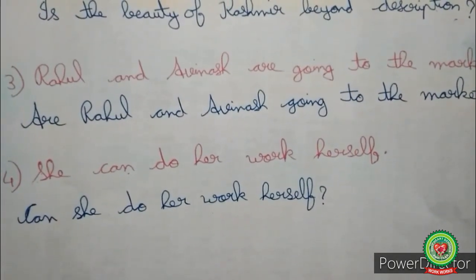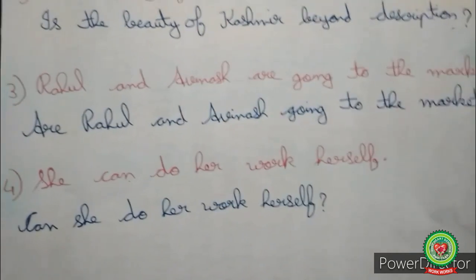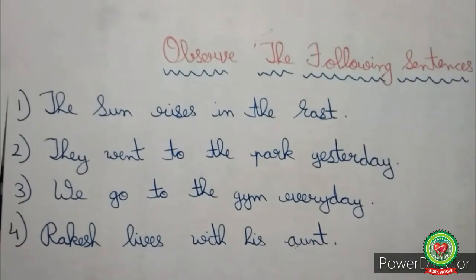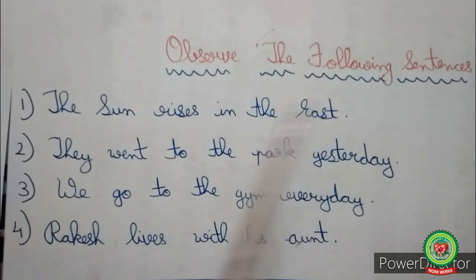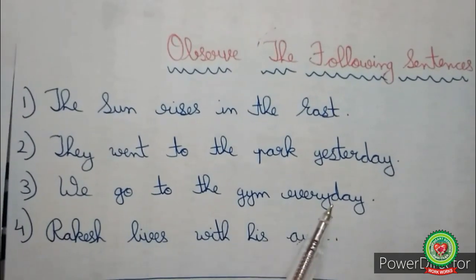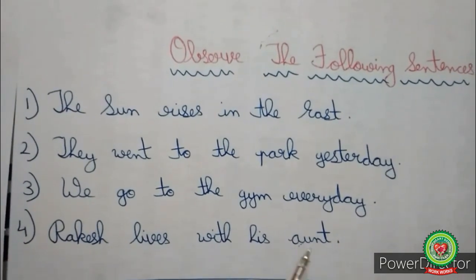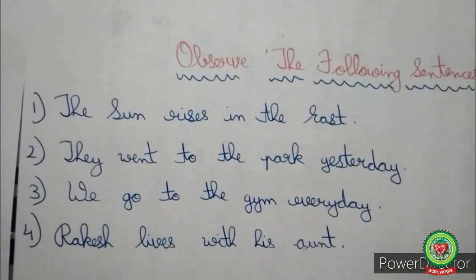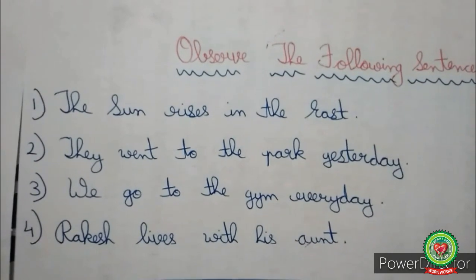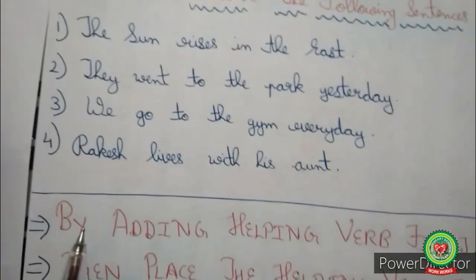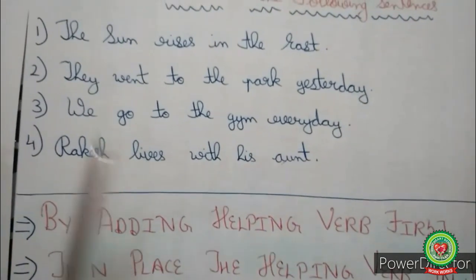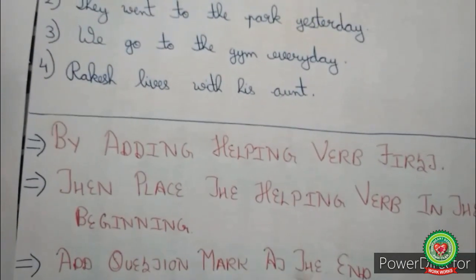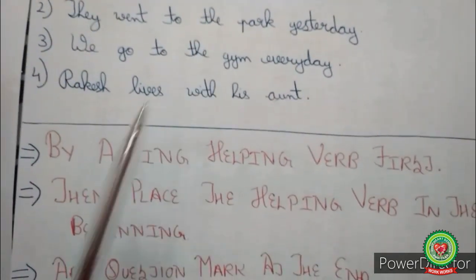Now students, we will learn how to change an assertive sentence into an interrogative sentence when there are no helping verbs present. Observe the following sentences: 'The sun rises in the east.', 'They went to the park yesterday.', 'We go to the gym every day.', 'Rakesh lives with his aunt.' The helping verb is missing in these sentences. We will first add a helping verb, then place it at the beginning, and finally add a question mark at the end.